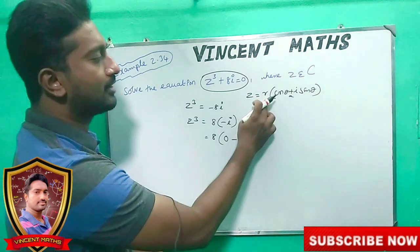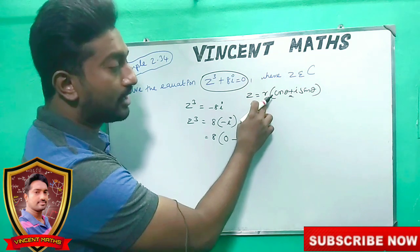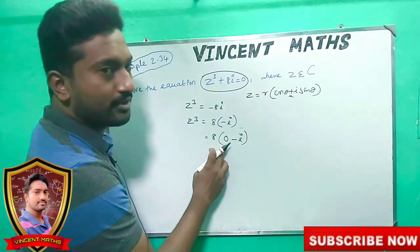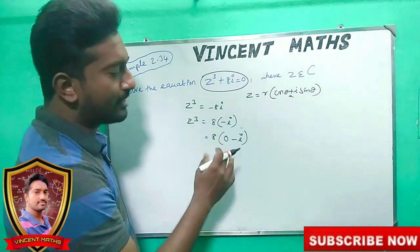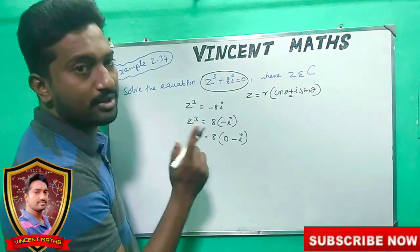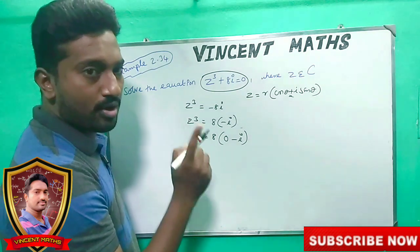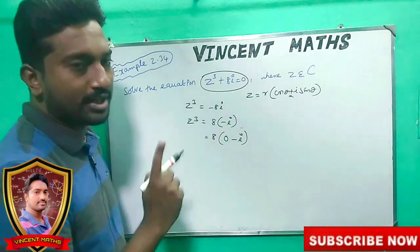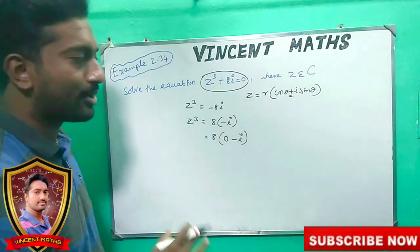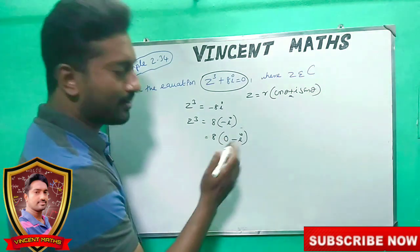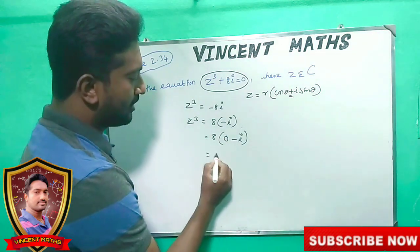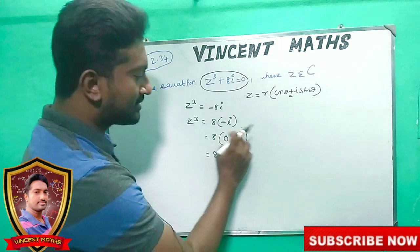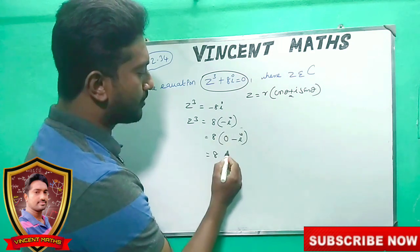What is the R value? R value is √(0² + (-1)²) = √1 = 1. So R value is 1. The 8 is a constant. Now let's talk about polar format.